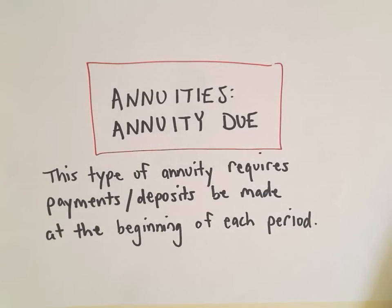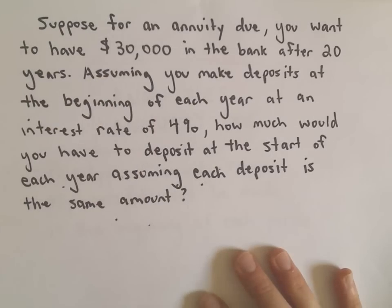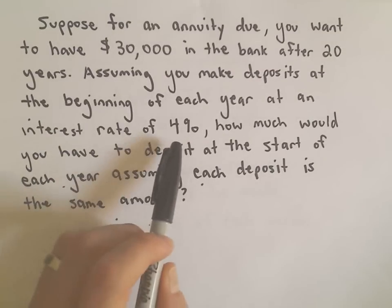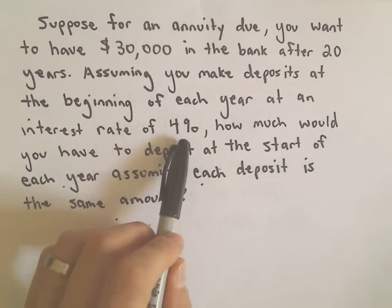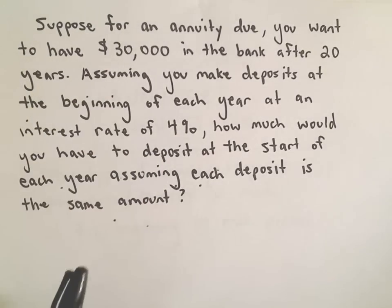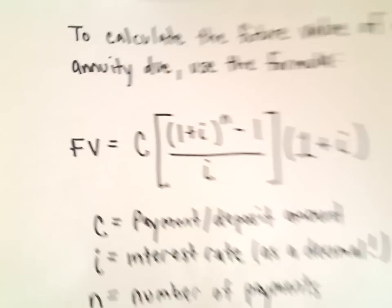All right, in this video I want to look at another example involving an annuity due. In this example, suppose you want to have $30,000 in the bank after 20 years, and you're going to make regular deposits at the beginning of each year. We can assume that we get an interest rate of 4% per year. So we want to know how much should each one of these deposits be. We want to know how much money we have to put into the bank every year at the beginning of the year so that we end up with this $30,000.